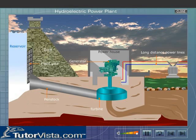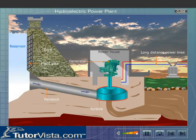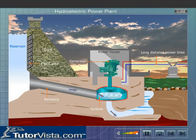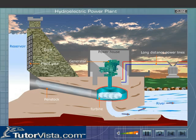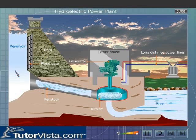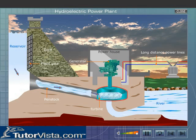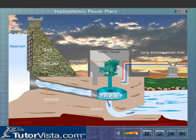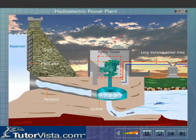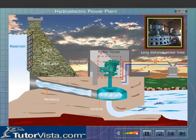Water flows through the penstock and rotates the turbine. The flowing water rotates the turbine, which is placed at the end of the penstock. The turbine in turn rotates the shaft that is connected to the coils of a generator.